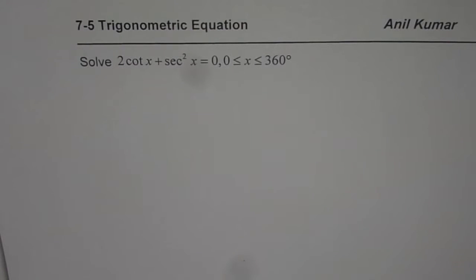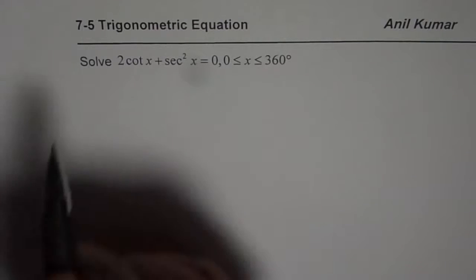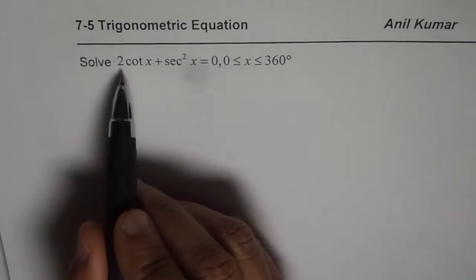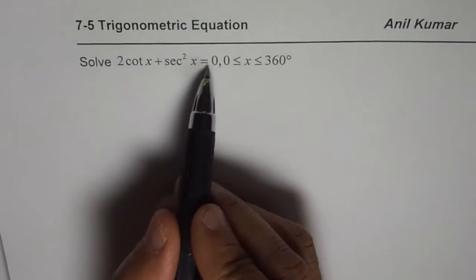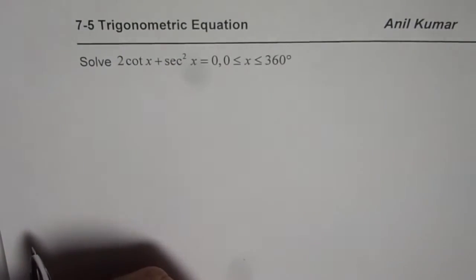I am Anil Kumar and here is a solution of a trigonometric equation which is not really factorable. So the question here is 2 cot x plus secant square x equals to 0 where x is between 0 and 360 degrees.